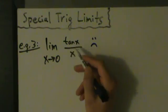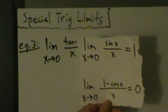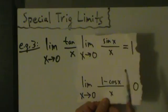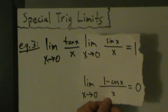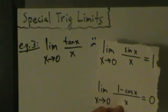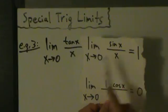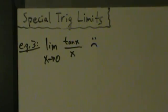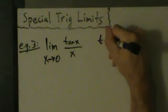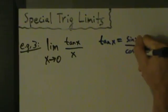But there's a trig function here, so that might tip us off — let's try special trig limits. If we look at our two special trig limits, this given problem kind of looks like one of them. The only difference is instead of sine we have tangent, but we'll work with that somehow. The trick is to remember that tangent of x equals sine of x over cosine of x.